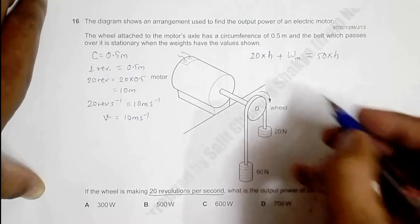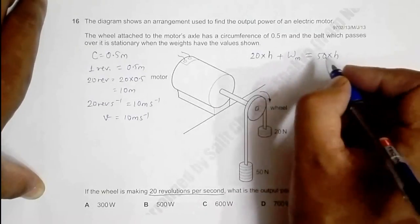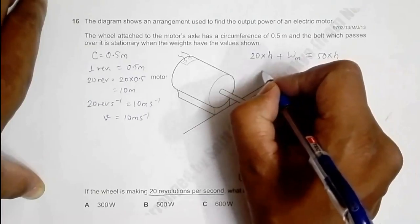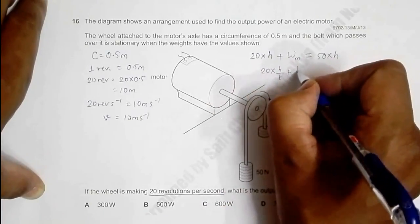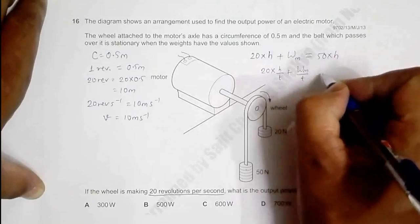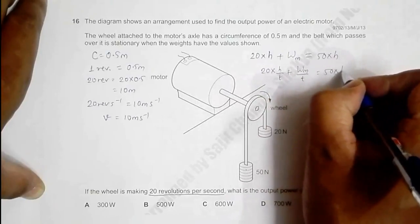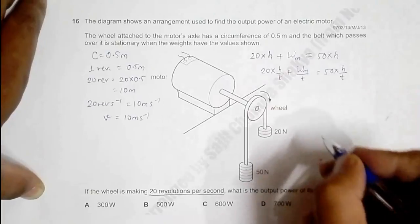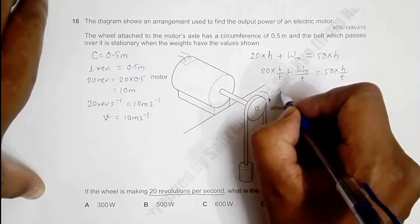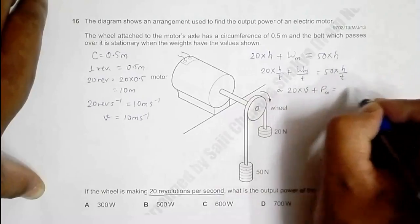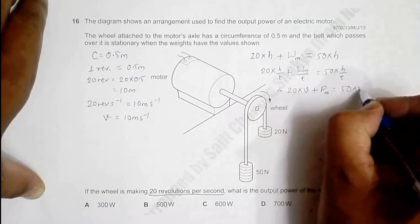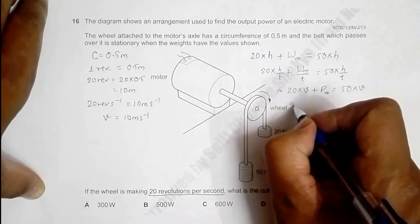If I divide both sides by time t, it will be 20 × h/t plus W_m/t should equal 50 × h/t. So 20 × velocity plus power of the motor should equal 50 × velocity.